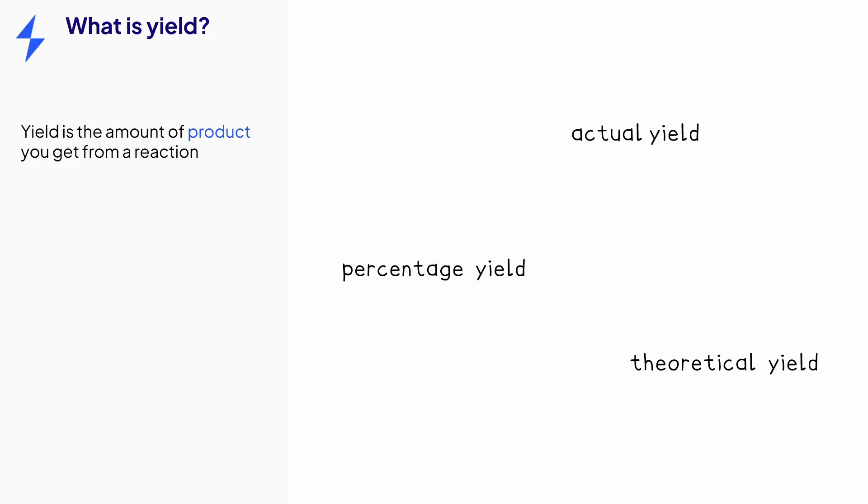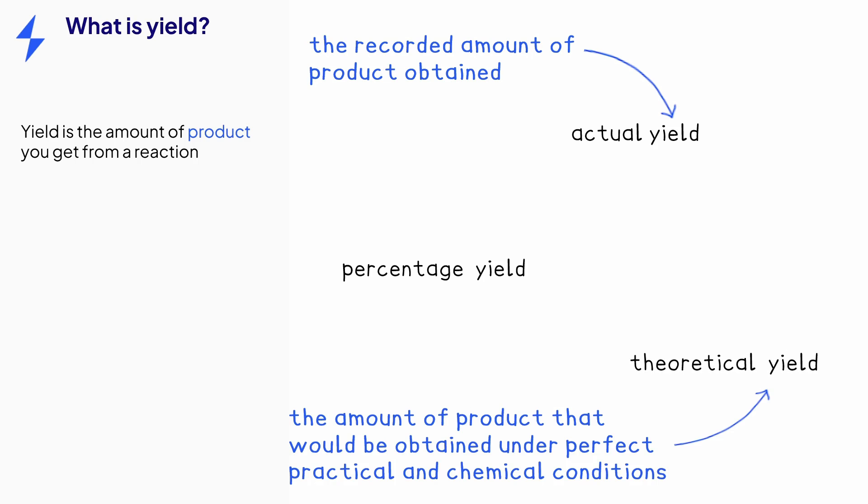So let's define each of these terms. The actual yield is how much product is actually produced in a reaction, so it's how much product is measured. The theoretical yield is the amount of product that would be obtained under perfect practical and chemical conditions. This is the value that you could calculate from using the amount of reactants used.